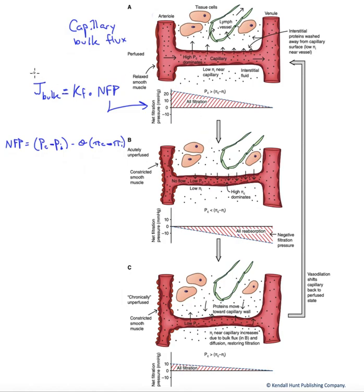And what we have here is the Starling equation that describes bulk flux, or J-bulk. And it equals Kf, the leakiness coefficient, times the net filtration pressure, the sum of all of those hydrostatic and osmotic pressures.